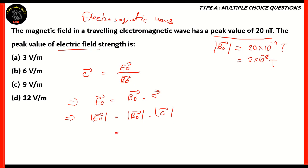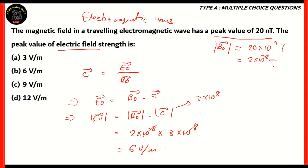Since we know the modulus value for both — for the speed of light it's 3 × 10⁸, which we take as standard for simplifying our calculations — we now have 2 × 10⁻⁸ times 3 × 10⁸. The 10⁸ and 10⁻⁸ cancel each other, and 2 times 3 gives you 6. So the correct answer is 6 volts per meter. The peak value of electric field strength is option B, 6 volts per meter.